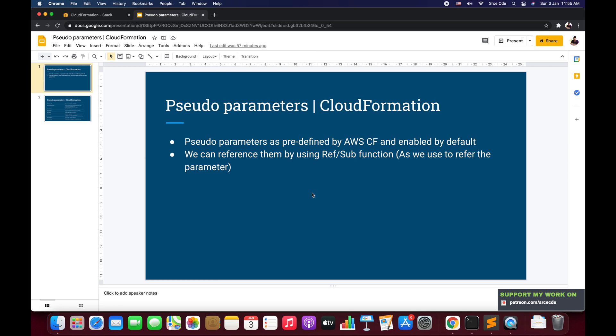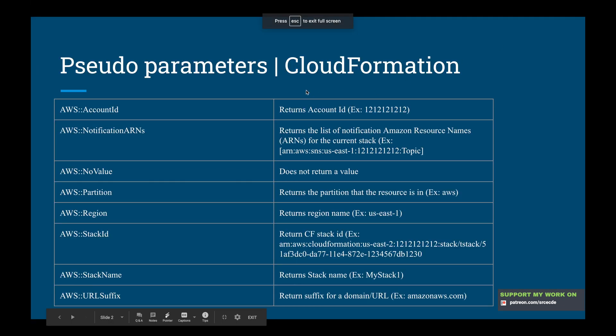Let's have a look at the list of pseudo parameters available within CloudFormation. These are the parameters we can leverage in AWS CloudFormation. It starts with AWS AccountId, which returns the account ID. Then we have AWS NotificationARNs, which returns the list of notification Amazon Resource Names — ARNs — for the current stack. This is configured while creating the stack, so we don't need to configure anything within the template itself.